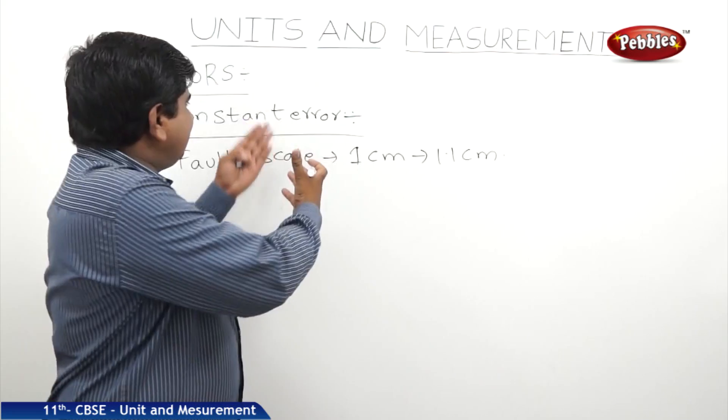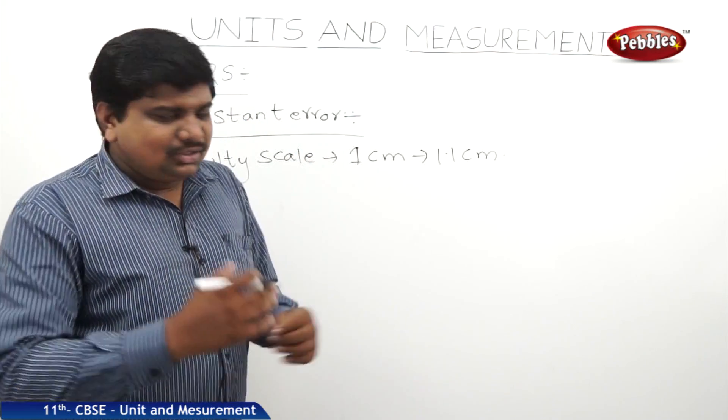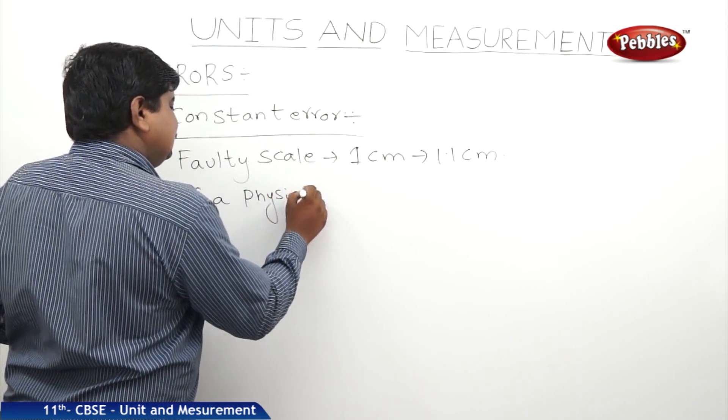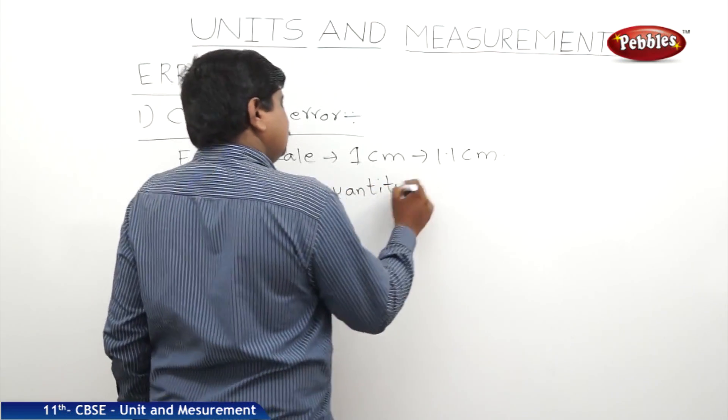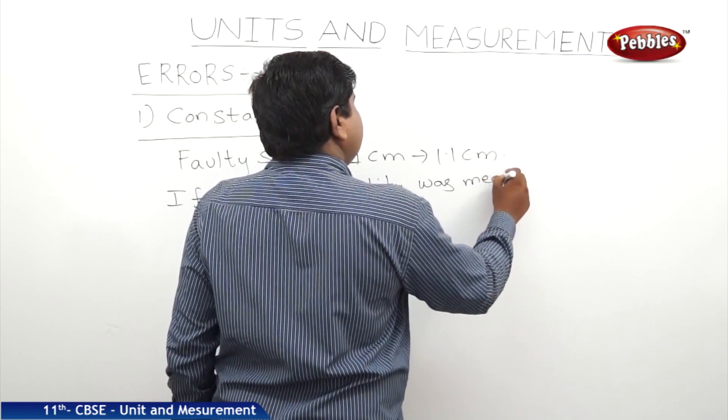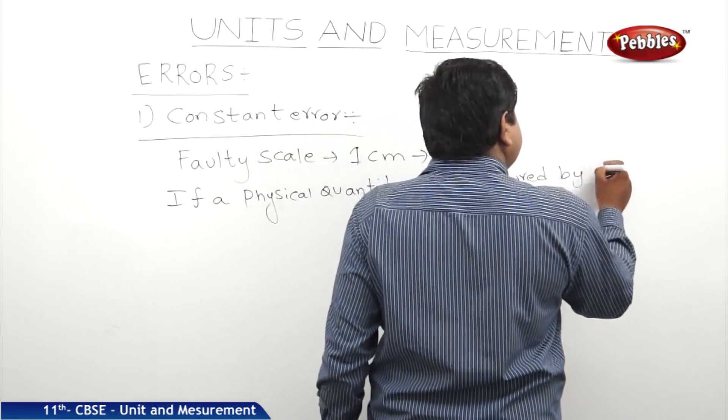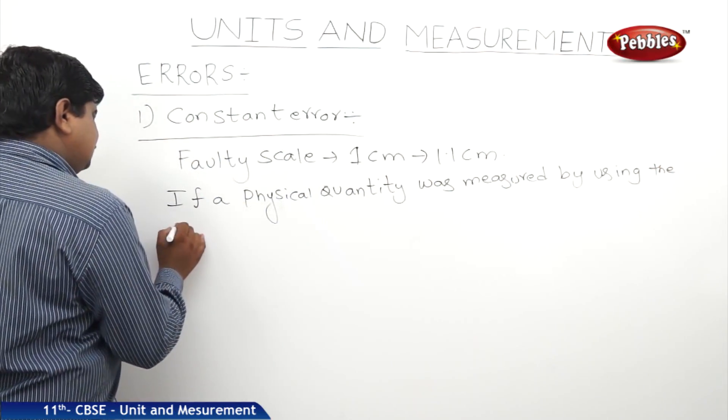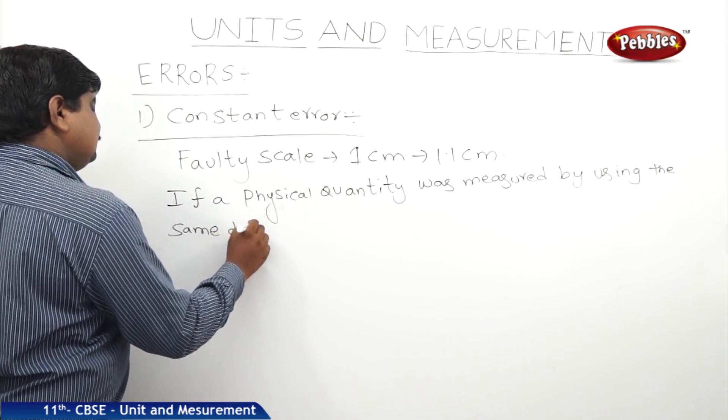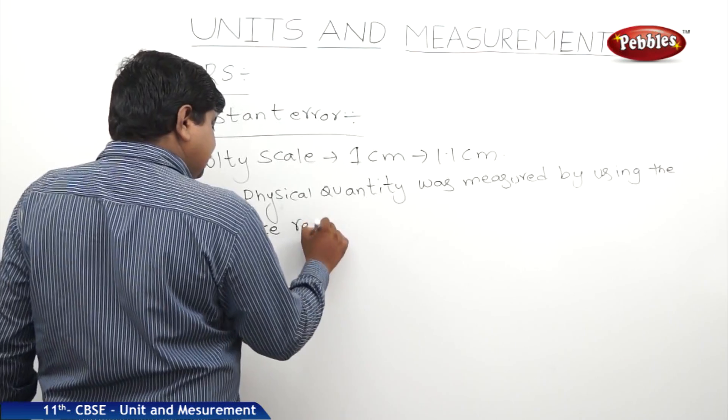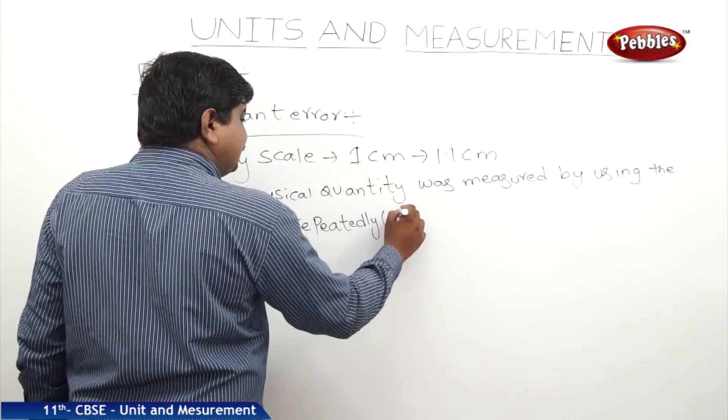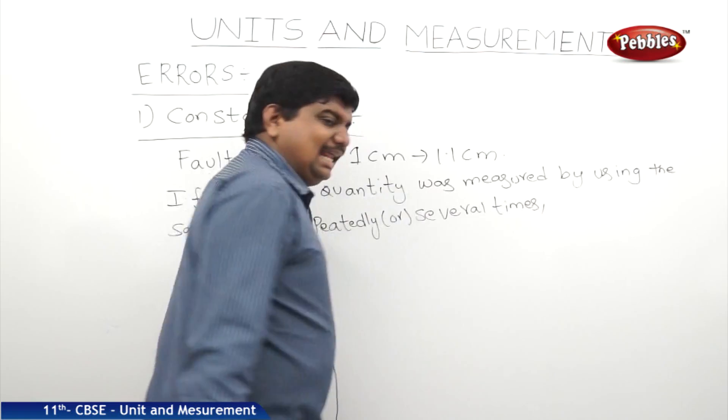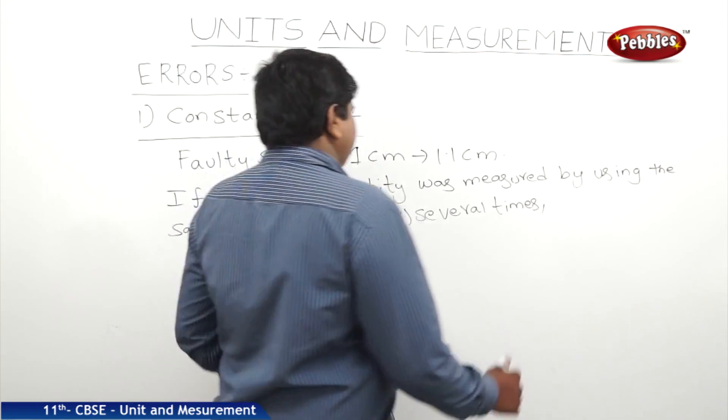This is the problem with this faulty scale in the case of constant error. So what we can understand is, if a physical quantity was measured by using the same device repeatedly or several times, if the error is fixed in that measurement, then the error is called constant error.